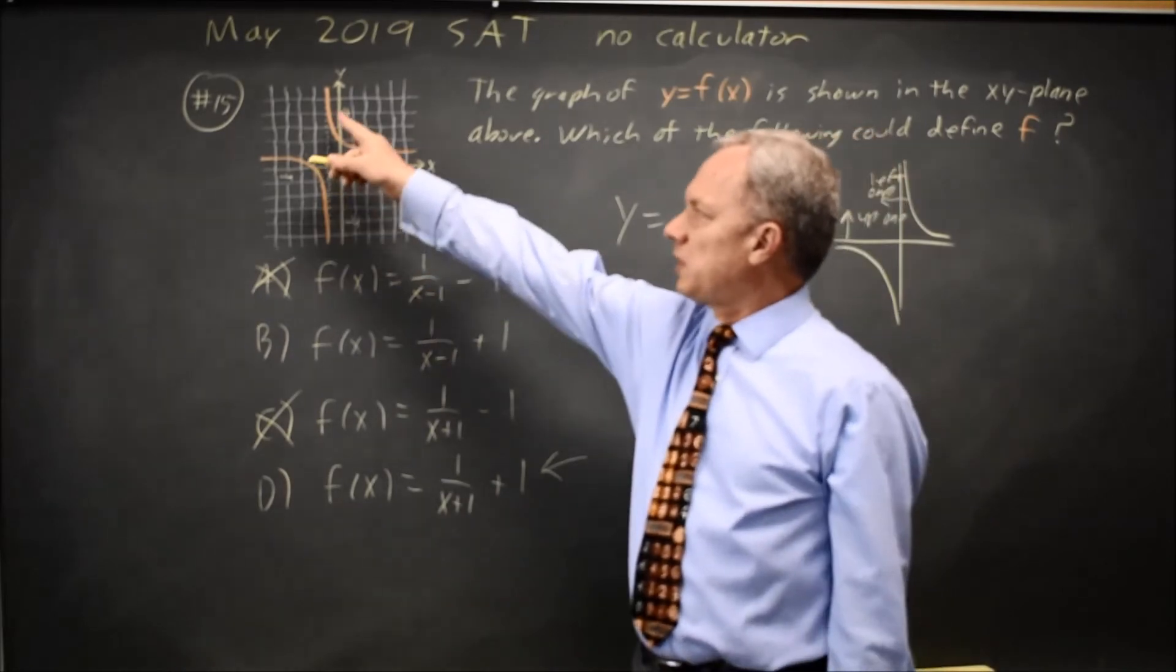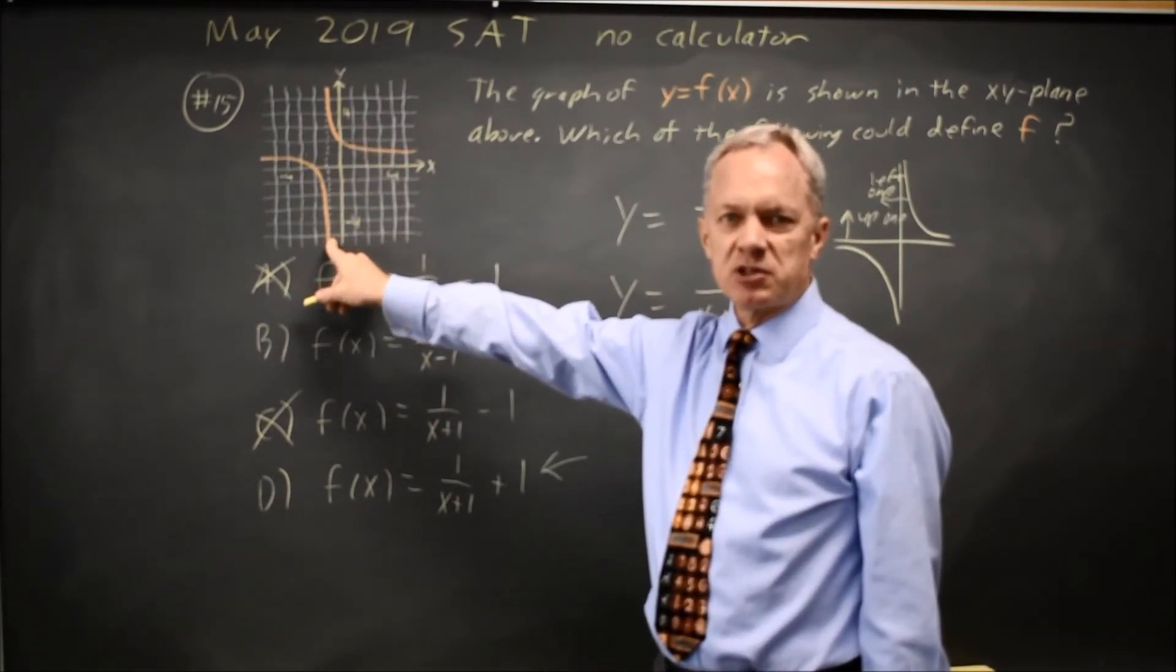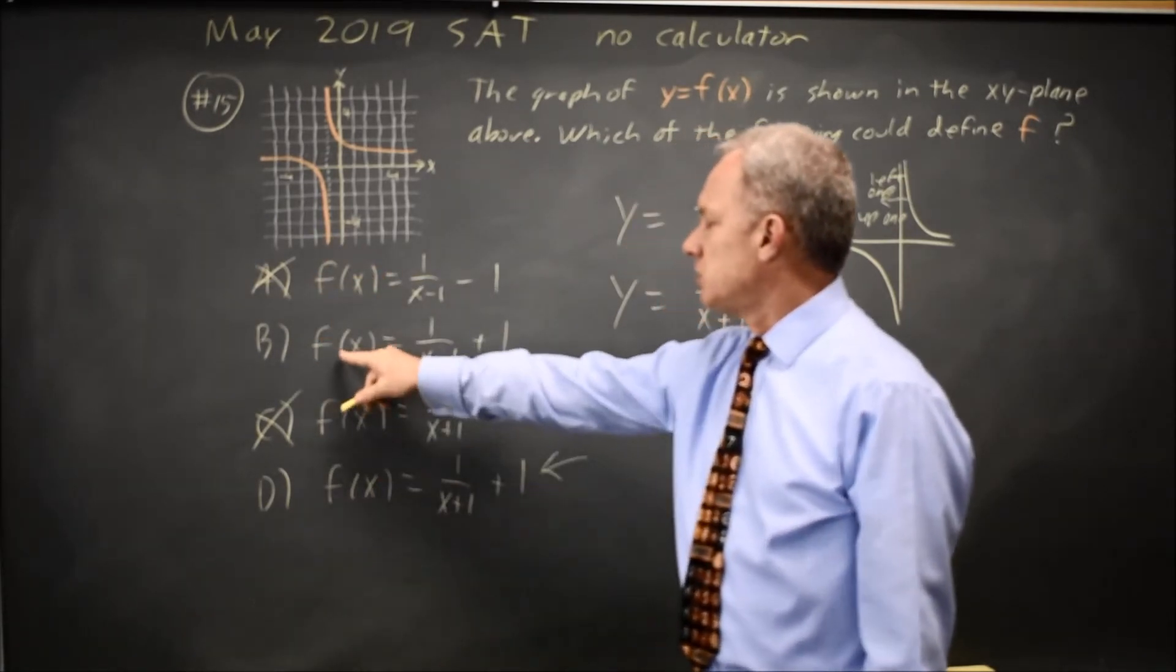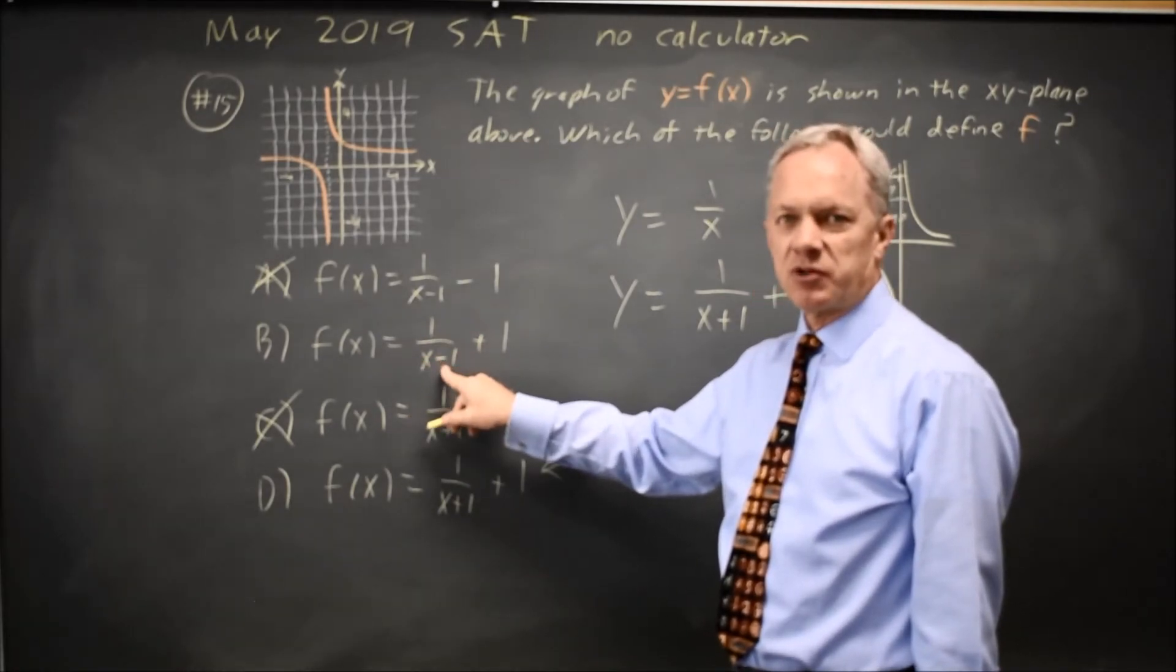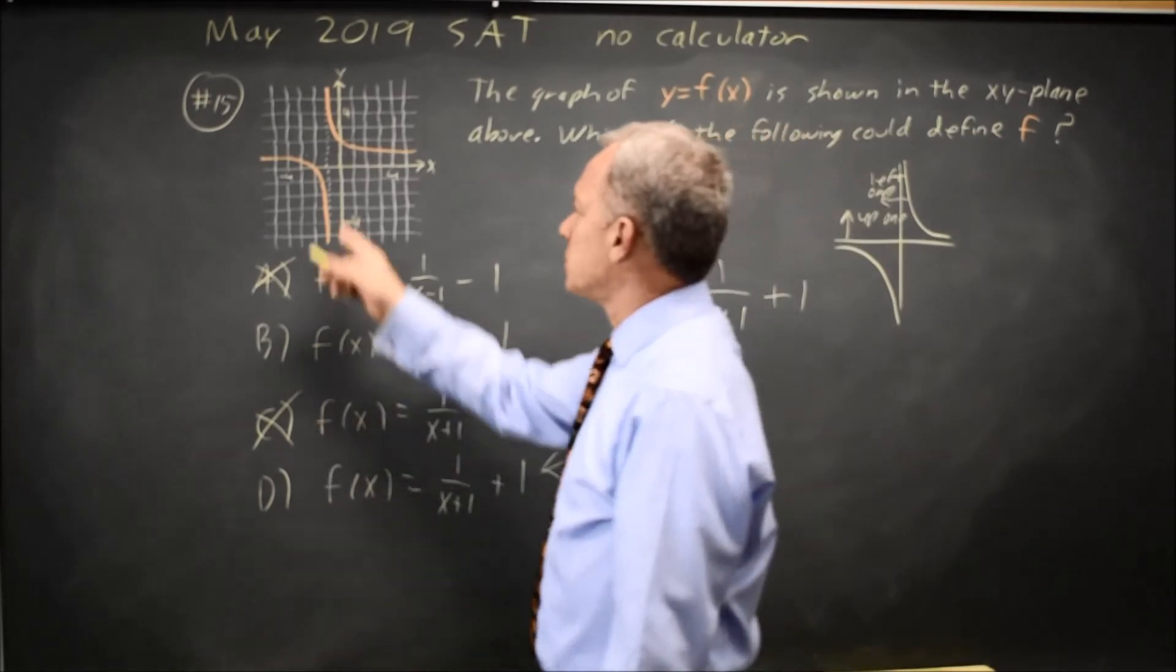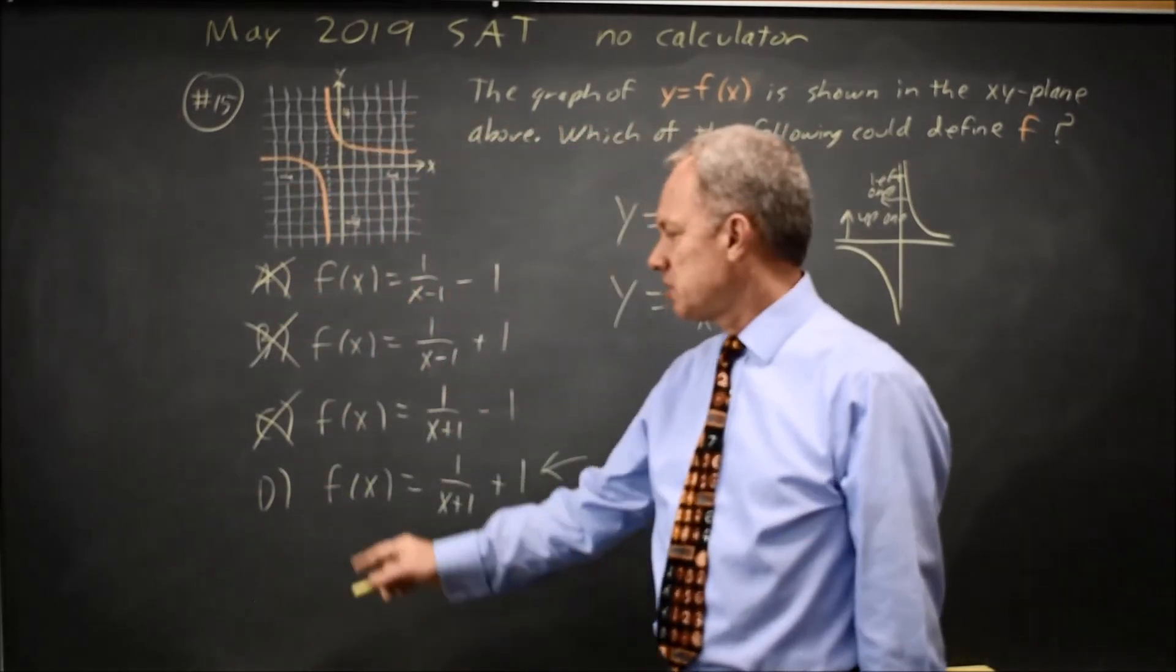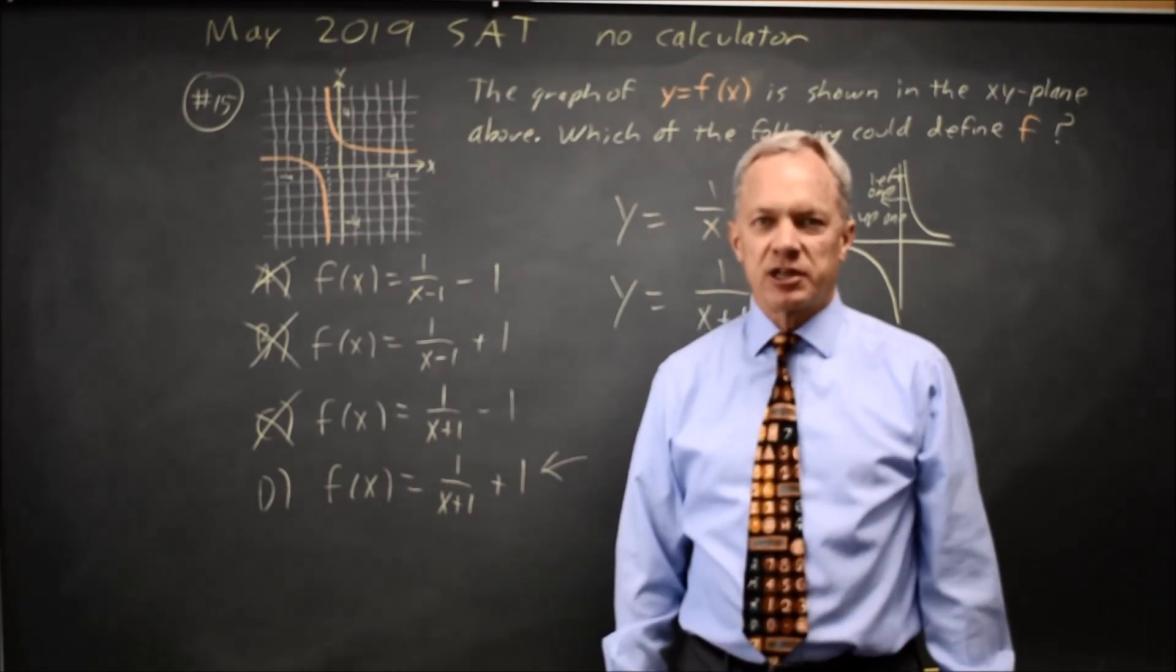Also, we have a vertical asymptote at x equals negative 1. If you substitute in x equals negative 1, the correct answer should be undefined. Choice B at negative 1 is 1 over negative 1 minus 1, which is 1 over negative 2, negative 1 half. That is defined, but this has a vertical asymptote at negative 1, so the correct answer would be undefined. Choice D is undefined at x equals negative 1, so that is our correct answer.